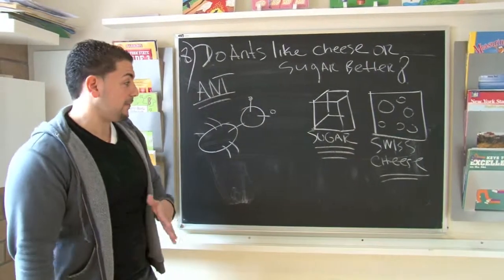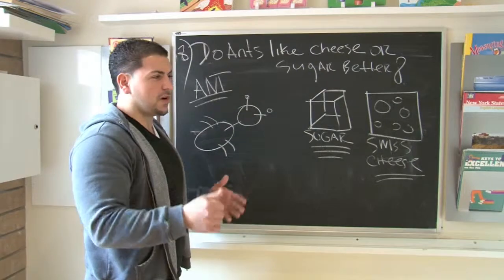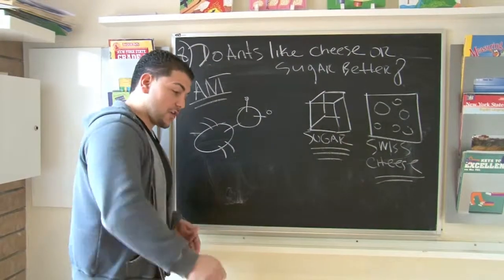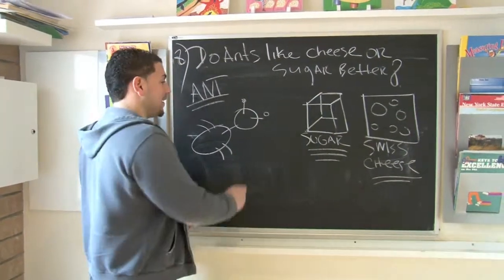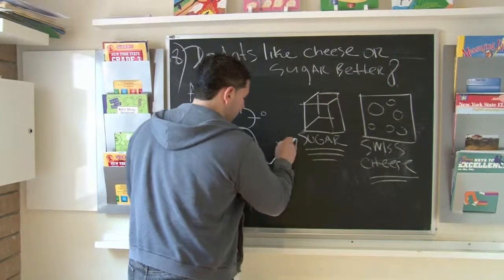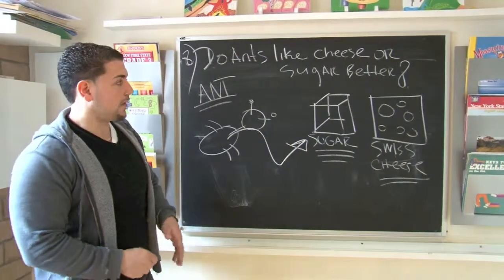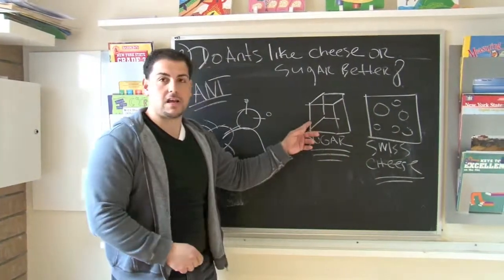More than likely, from my own history, if you ever had a soda or a quarter drink and you dropped it on the floor in the summer - ants love sugar. So more than likely, what you're going to see is that the ants gravitate towards the sugar.